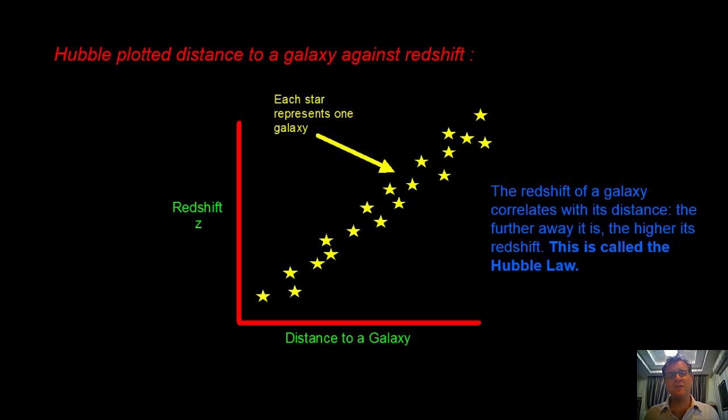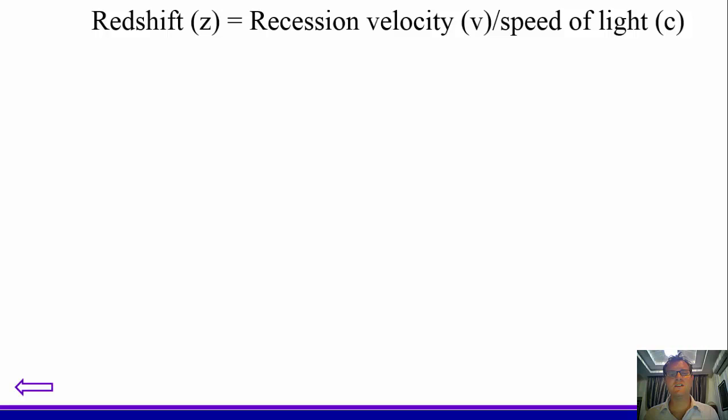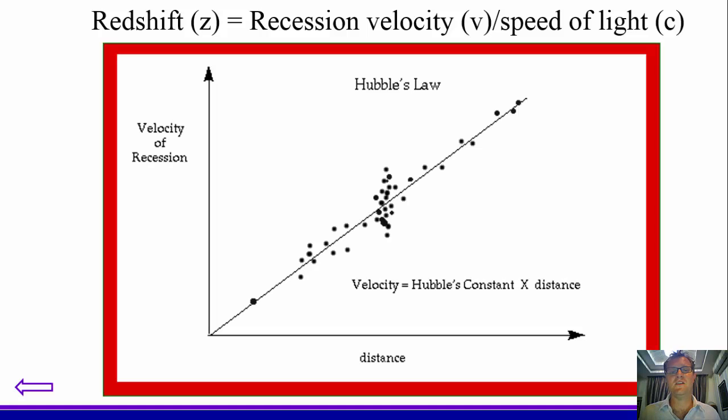Now, he thought about it a little bit more and recognized that the redshift should be equal to the recession velocity divided by the speed of light. So if we think back to when we're doing calculations with the Doppler shift using electromagnetic spectrum, it's kind of based on that.